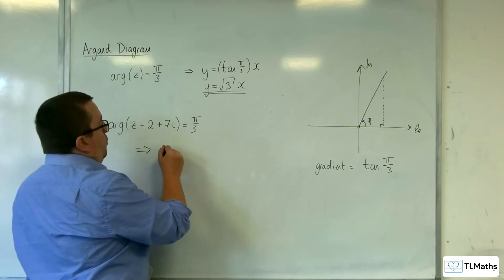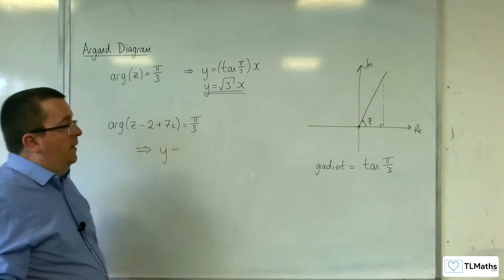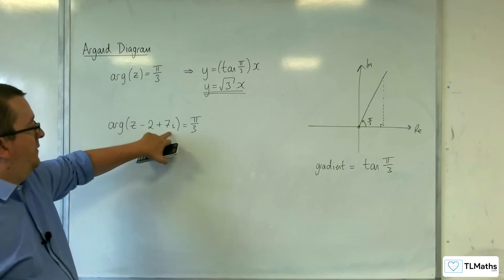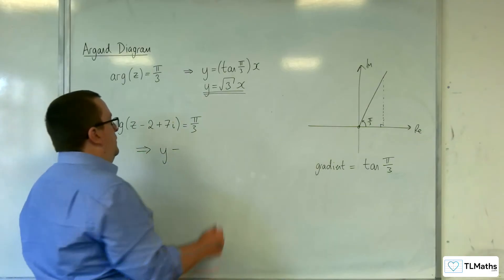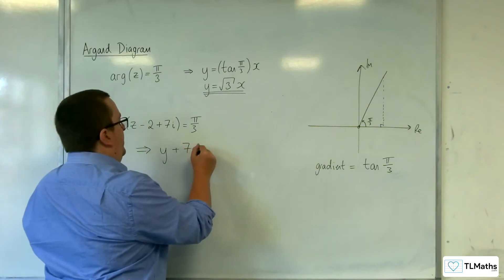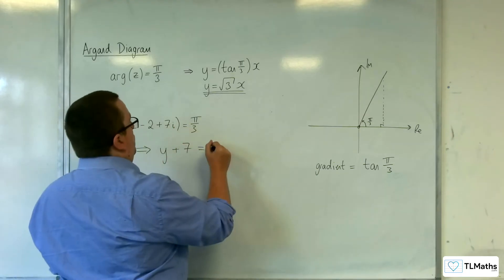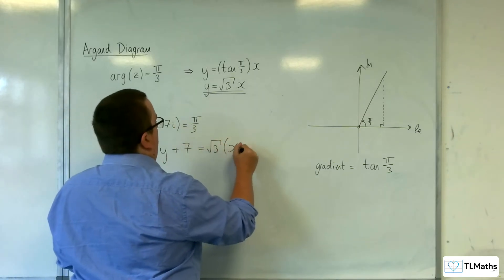so I just need to think, it's y minus y₁. I know that it's going through (2, -7), so that would be plus 7 and minus 2 here, so √3(x minus 2).